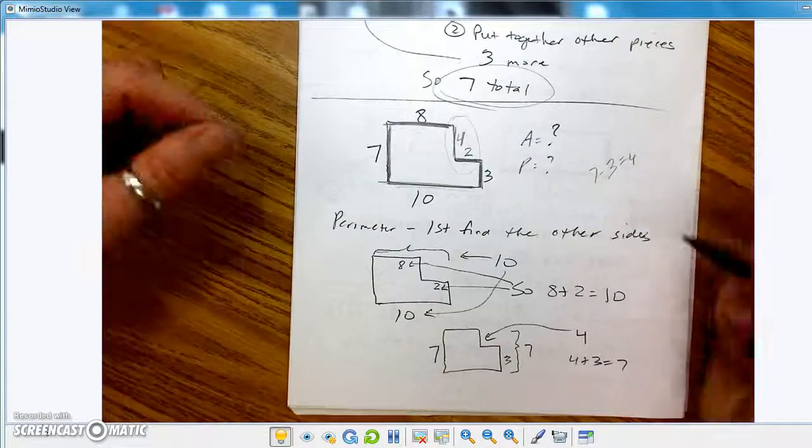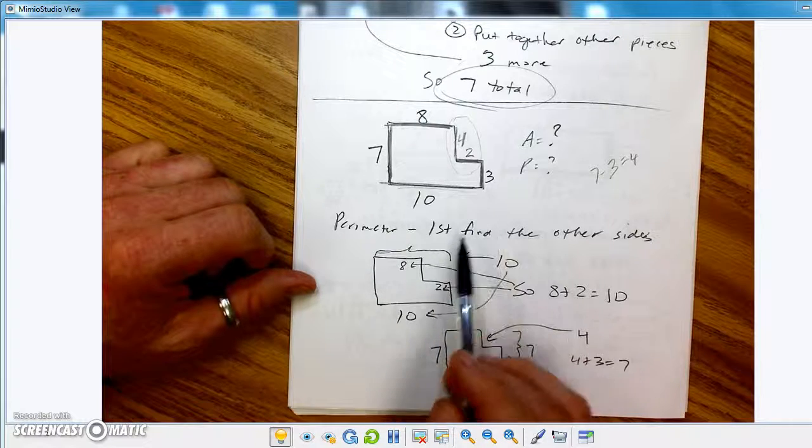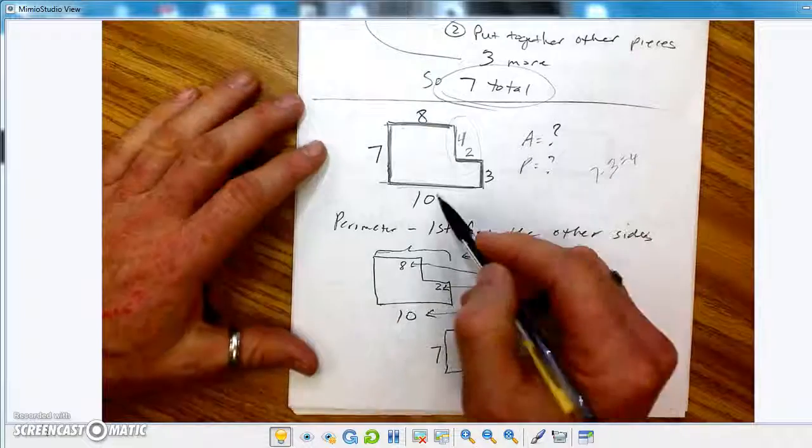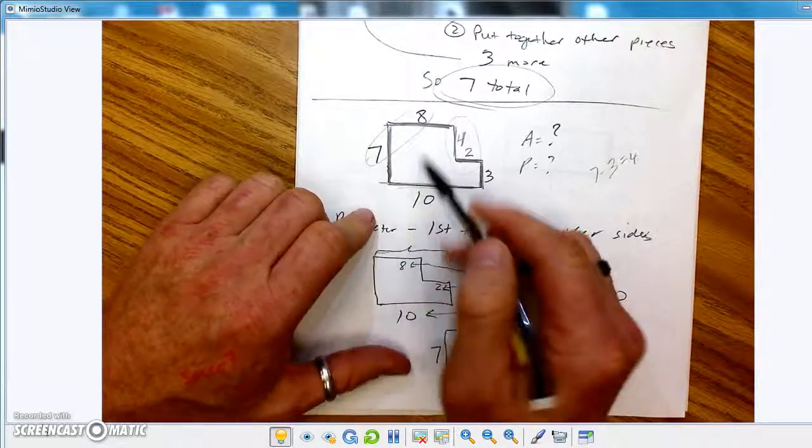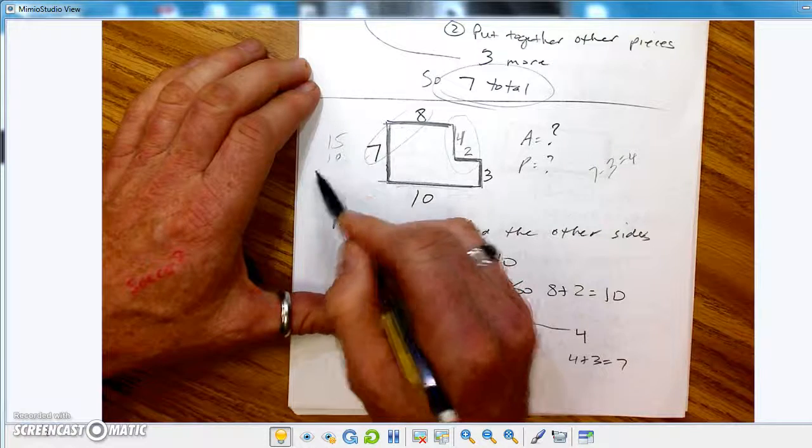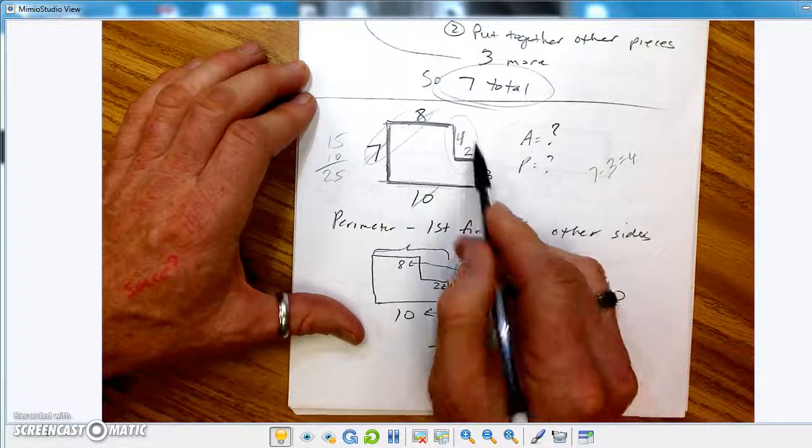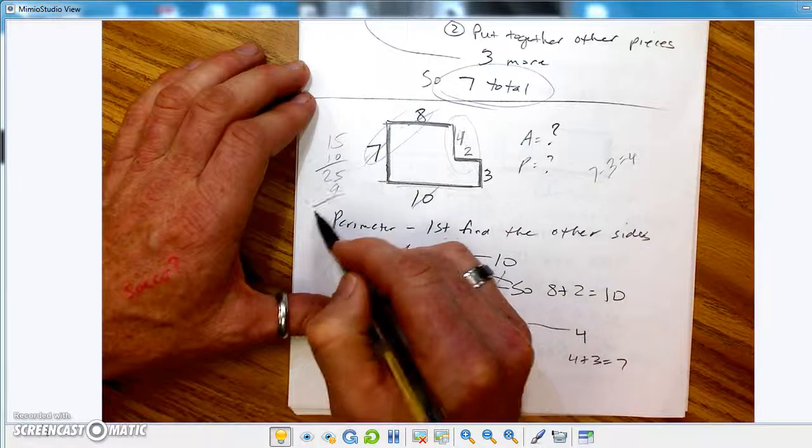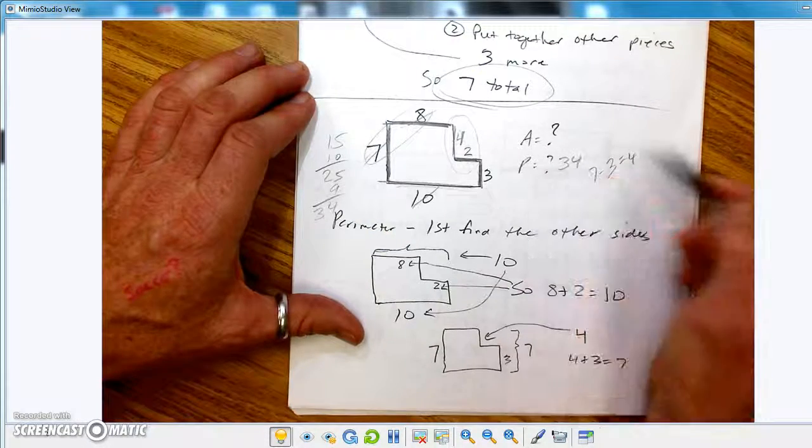And so, now I can start adding stuff up. If I go and add up all the perimeter, gosh, I don't even know. Let's see. 10 is a good number. 7 and 8 is 15, plus 10, we're up to 25. So, I did you, and I did that, and I did that. 4 and 2 is 6, plus 3 is 9. So, 25 plus 9 equals 34. So, I think the perimeter is 34.